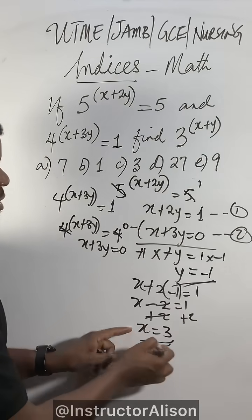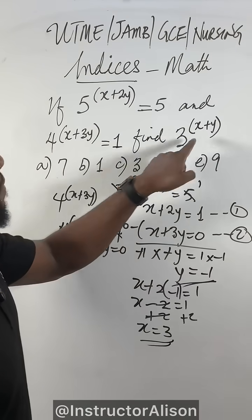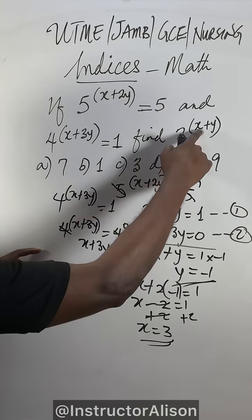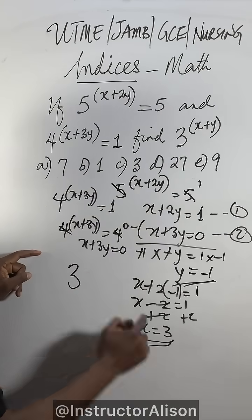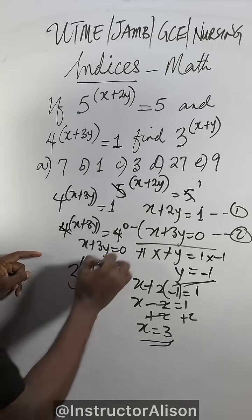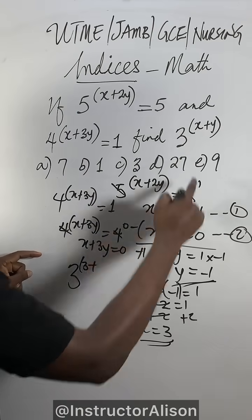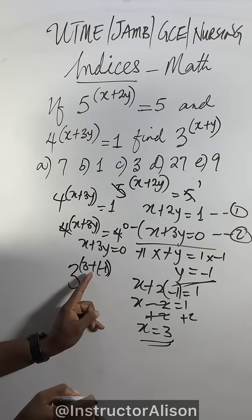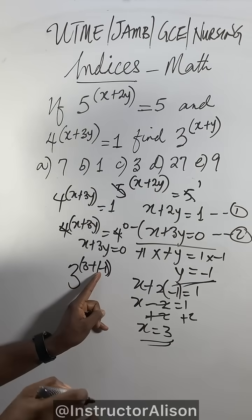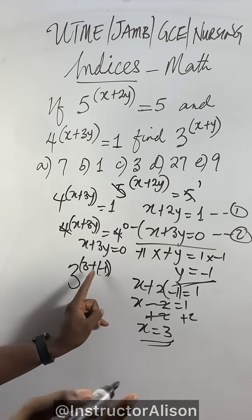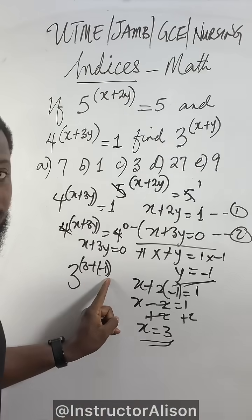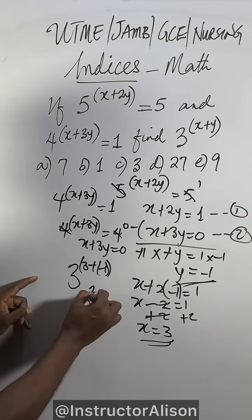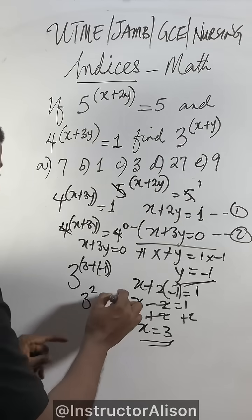Now I have x and y. To find the final answer, take 3 to the power of x plus y. Put x as 3, plus y as minus 1. So 3 plus minus 1 is 3 minus 1, which equals 2. So 3 to the power of 2, which is 9.